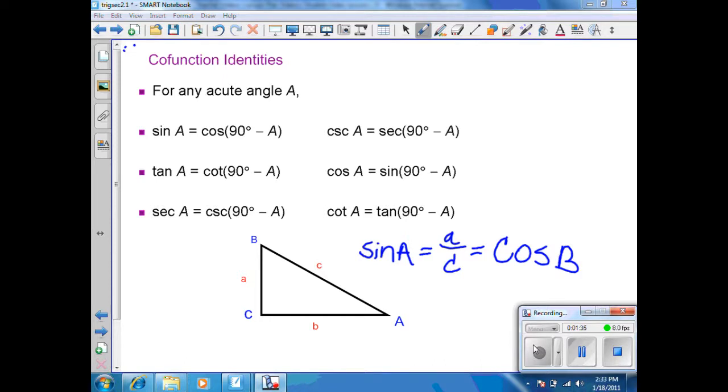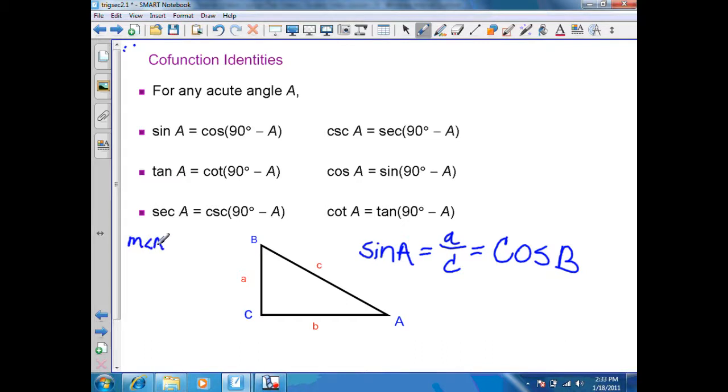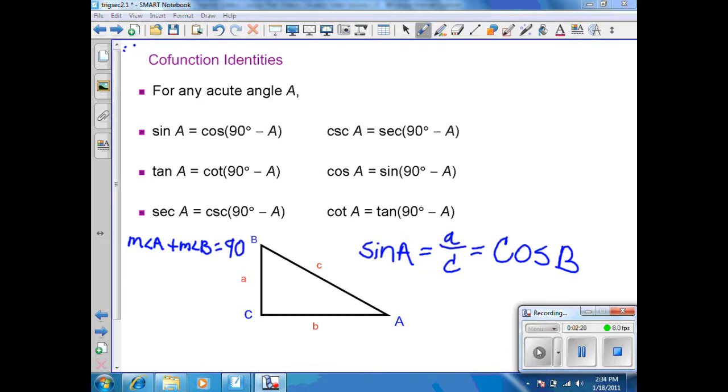Another thing to keep in mind with cofunctions are the value of the acute angles. Here, angle A and angle B in this triangle are the acute angles. Also know that the measure of angle A plus the measure of angle B is 90 degrees. Therefore, in all of my cofunctions, the sum of the two acute angles on the left and right side is always going to be 90 degrees. And we can use that information to solve problems in later examples. That's why in these problems they show an initial angle of A and on the other side, they show not an angle B but 90 minus A. That shows that these two are complementary.